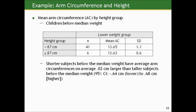The majority of the children below the median weight are also in the shorter height group, but there are some who are taller as well. The mean arm circumferences for the two height groups among the lower weight children are almost identical — the mean difference is just 0.02 centimeters. So shorter subjects below the median weight have average arm circumferences of 0.02 centimeters larger than taller subjects below the median weight. The 95% confidence interval is from negative 0.64 to 0.68 centimeters — almost equally balanced on positive and negative possibilities, and clearly not statistically significant.